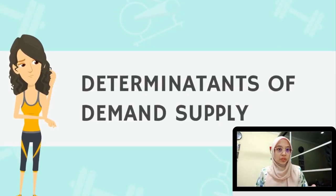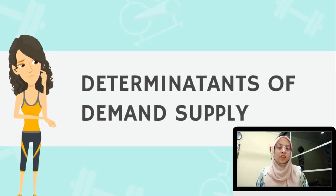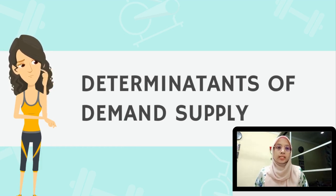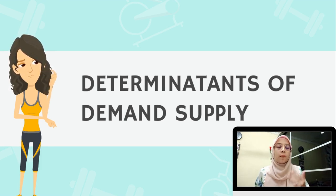Let me explain to you about the determinants of demand and supply, which are: first, cost and availability of palm oil production factors; second, changes in palm oil prices; third, technology level; and fourth, palm oil producers' expectations of future prices.